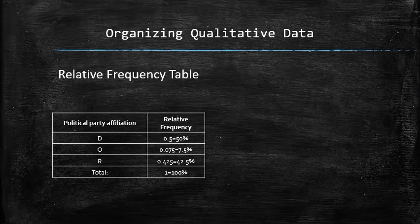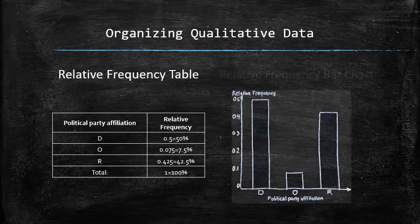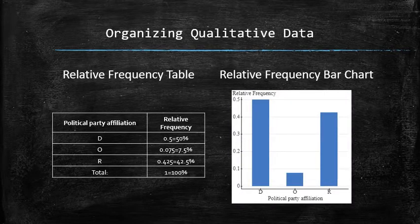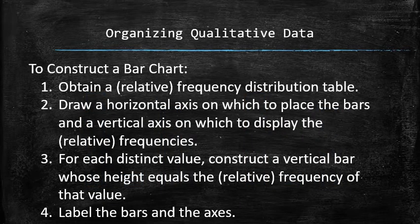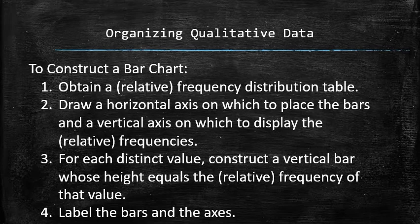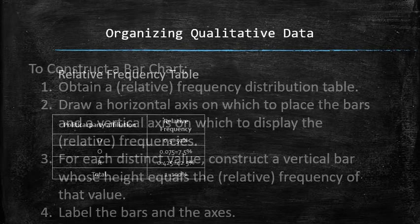In the same way, we may visualize the relative frequency table. Such a summary is called the relative frequency bar chart. Note that the only difference between the frequency and the relative frequency bar charts is the scale and the units on the vertical axis — everything else is identical. In summary, to construct a bar chart or relative frequency bar chart, we first obtain a frequency or relative frequency distribution table. Then we draw a horizontal axis on which to place the bars and a vertical axis on which to display the frequencies or relative frequencies. For each distinct value, we construct a vertical bar whose height equals the frequency or relative frequency of that value. At the end, we label the bars and the axes. Frequency tables and bar charts are considered the most basic ways of organizing the data.